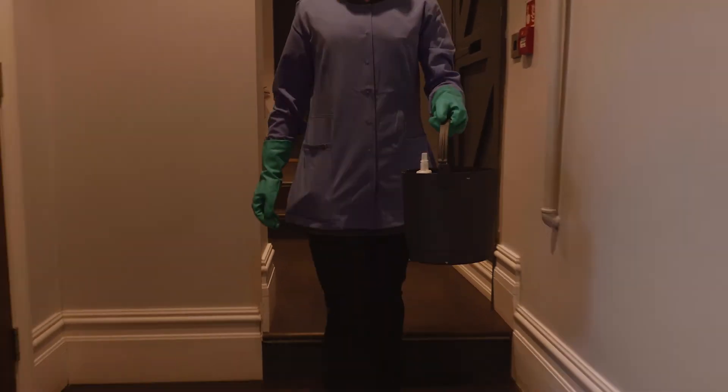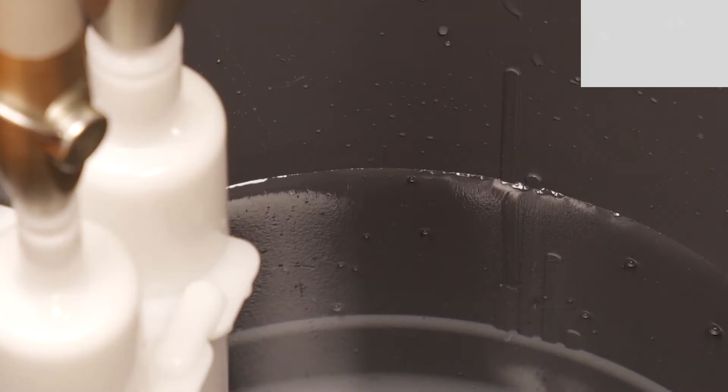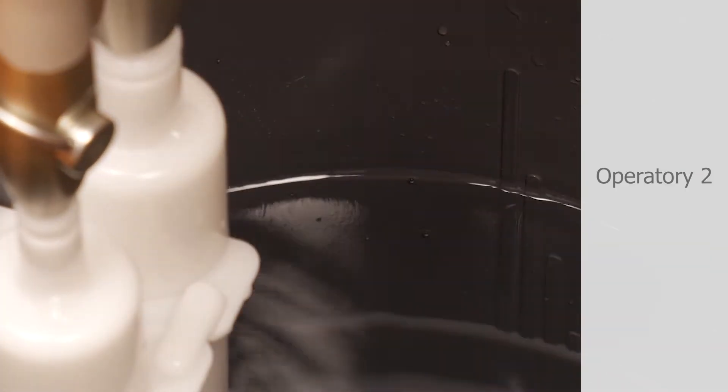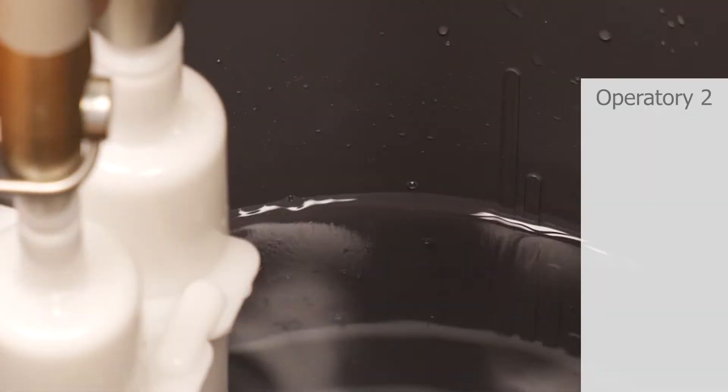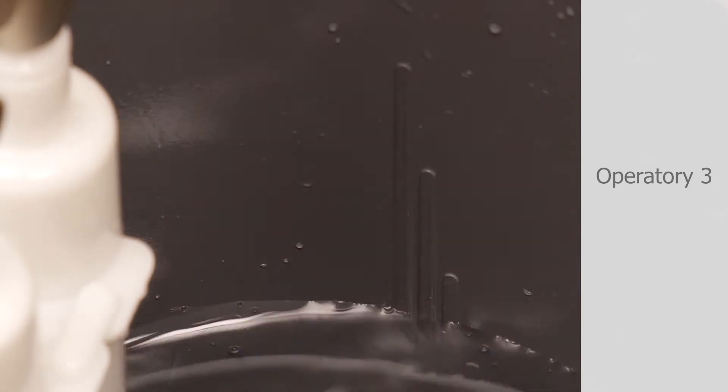Move the dispenser to the next furthest operatory from the central vacuum pump. Repeat this process and move on to the next operatory until all evacuation lines have been treated. Only leave suction on in the first operatory treated.